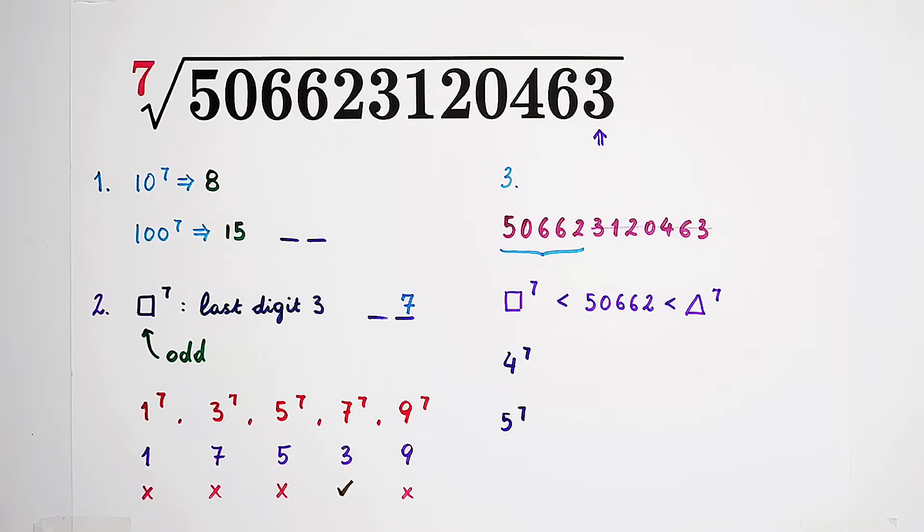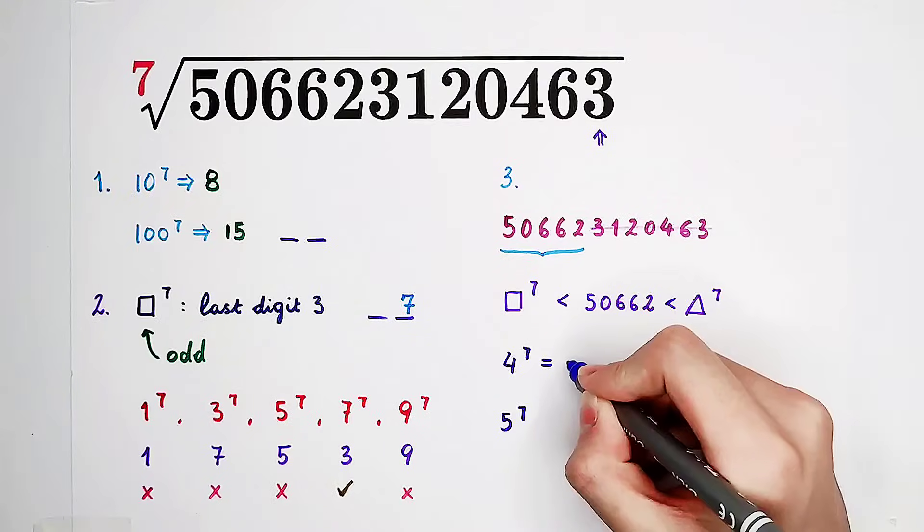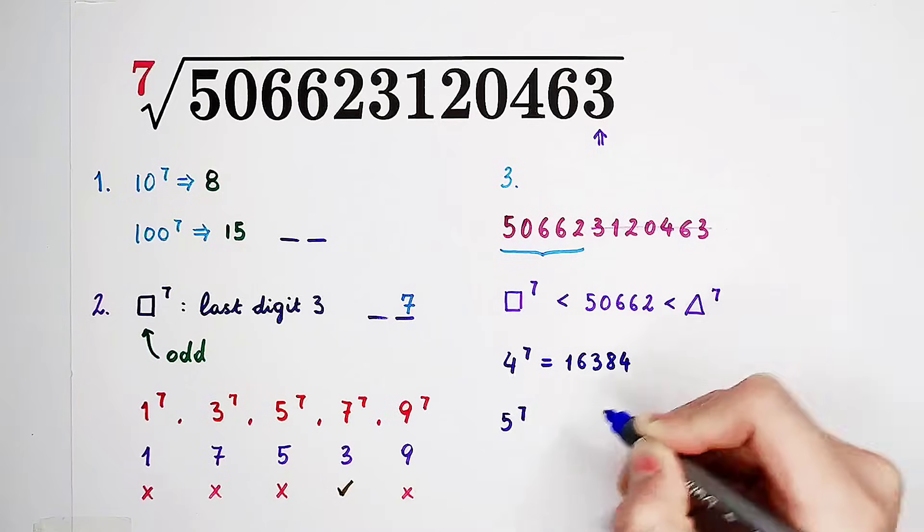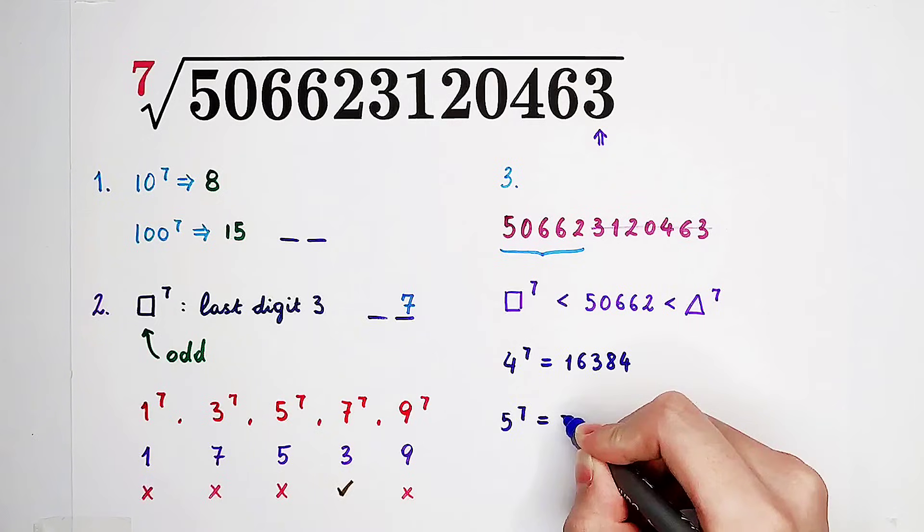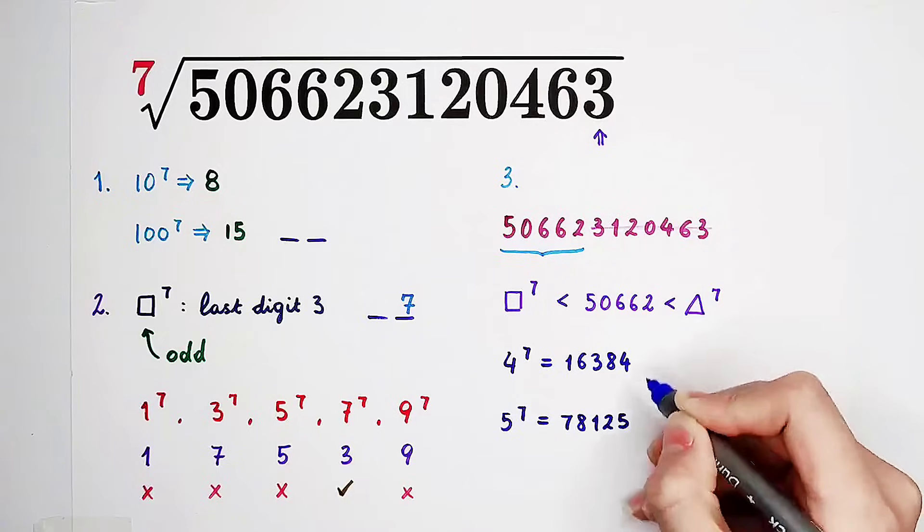So now, I have to find the square and the triangle. What are they? Okay. Now, use your calculation tricks. And then, you can find out that 4 to the power of 7 is 16384, smaller than this. And 5 to the power of 7 is 78125, bigger than this.